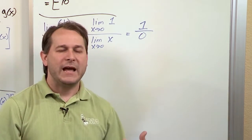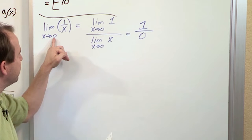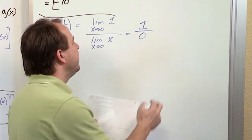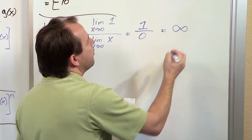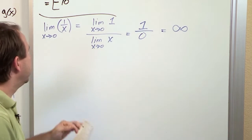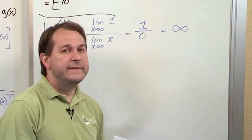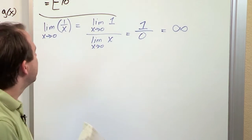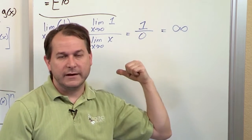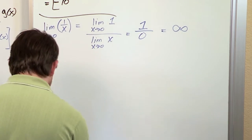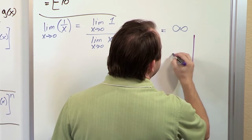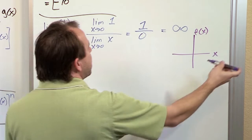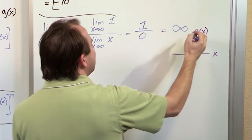Now this does give you kind of a weird answer: 1 over 0. But if you think about it, as you get closer and closer to 0 but never quite get there, you're going to be dividing by smaller and smaller numbers. So what's really going to happen is this limit is going to approach infinity. And if you actually plot this, you will see that it does approach infinity as you get there. Now it depends on what direction you're approaching from, because if I'm approaching from this way, I'm dividing by smaller and smaller positive values.